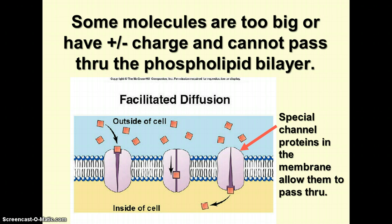Facilitated diffusion involves special channel proteins in the membrane to allow things to pass through. Some channel proteins are just like tubes that molecules can pass through. Others are special proteins that change shape when they come in contact with the molecule. But the molecules are still moving from high concentration to low, like diffusion, so it is still diffusion. And there's no energy involved, so it's still considered passive transport.